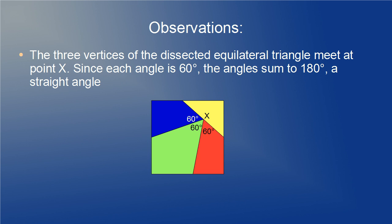Secondly, let's look at that very busy point inside the square. We'll call this point x. Notice that the three vertices of the dissected equilateral triangle meet at point x. Since each angle is 60 degrees, the angles sum to 180, a straight angle.